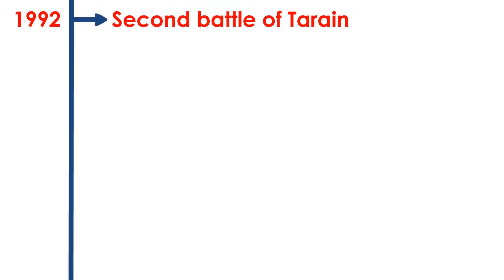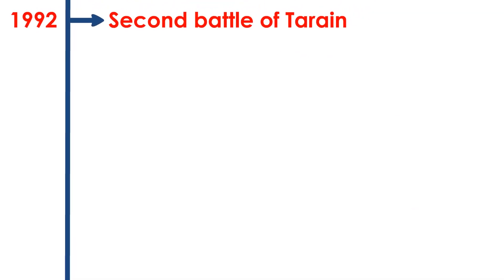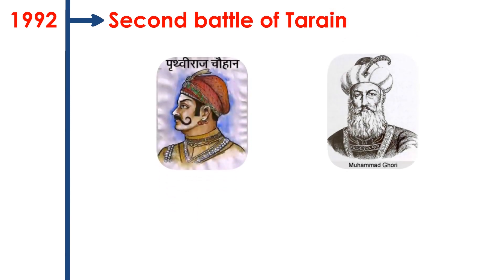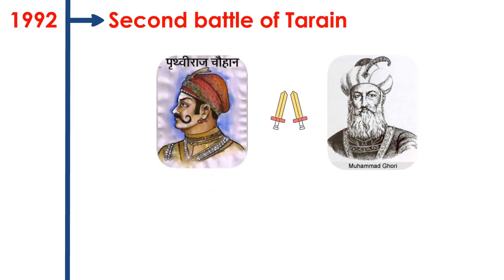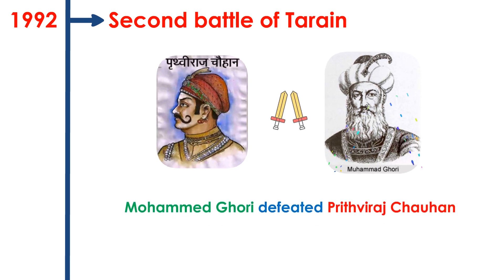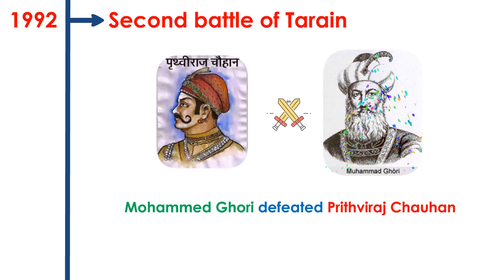Second Battle of Tarain. The battle was fought between Prithviraj Chauhan and Muhammad Gori, in which Muhammad Gori defeated Prithviraj Chauhan.